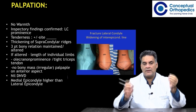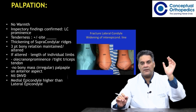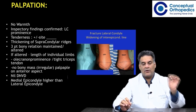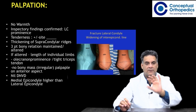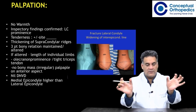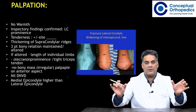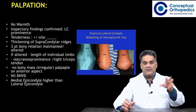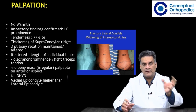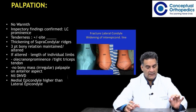On palpation, note the temperature and tenderness. Confirm the findings of inspection: thickening of the lateral condylar ridge, the medial condylar ridge, and the supracondylar ridge. Note the three-point relationship. Discuss the individual components — the distance between the condyles on both sides, the distance between the tip of the medial epicondyle and the olecranon, and the tip of the lateral epicondyle and the olecranon. Check for any palpable mass in the cubital fossa, any distal vascular deficit, and palpable lymph nodes.